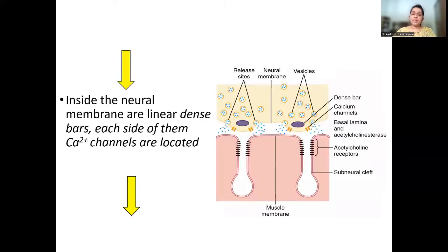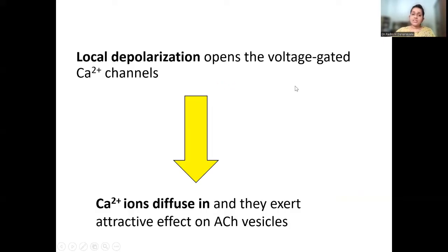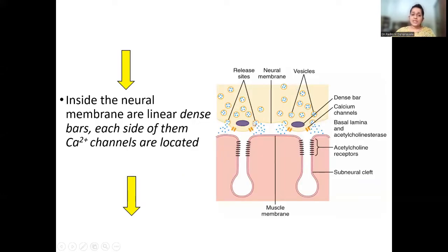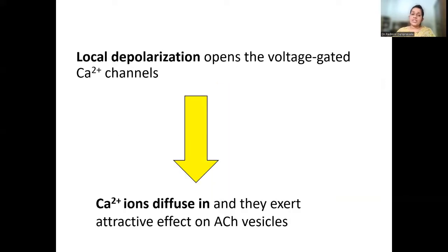Inside the neural membrane there are dense bars — linear dense bars, which you can see clearly in the cross-sectional view. On each side of these dense bars, calcium ion channels are located. There are also vesicles filled with acetylcholine. When the action potential depolarizes the pre-synaptic neuron, it opens the voltage-gated calcium channels. Calcium ions then diffuse in and exert an attractive effect on the acetylcholine vesicles.